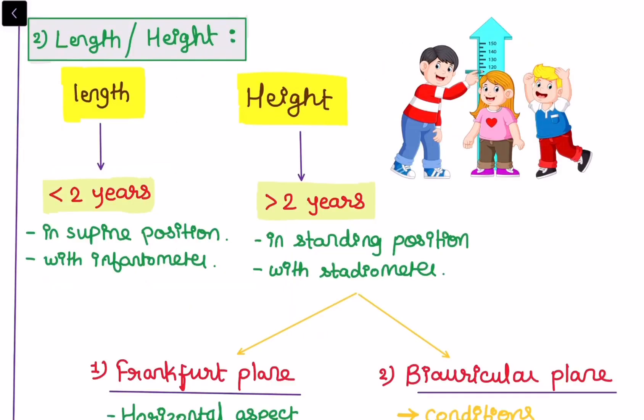Now talking about the second parameter — length or height of a newborn. Length is measured when the baby is less than two years, in the supine position, with the help of an infantometer. Height is measured when the baby is more than two years, in a standing position, with the help of a stadiometer.